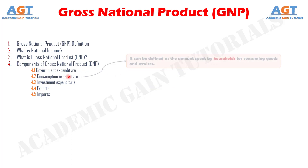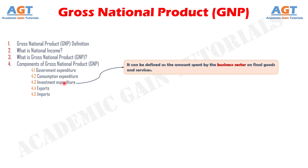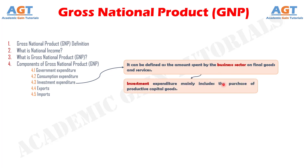Number two, consumption expenditure. It can be defined as the amount spent by households for consuming goods and services. Consumption expenditure is incurred to satisfy needs and wants. Number three, investment expenditure. It can be defined as the amount spent by the business sector on final goods and services. Investment expenditure mainly includes the purchase of productive capital goods.